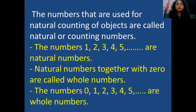Natural numbers together with 0 are called whole numbers. The numbers 0, 1, 2, 3, 4, 5, 6 and so on are whole numbers. So what is the difference between natural numbers and whole numbers? Natural numbers start from 1 whereas whole numbers start from 0.